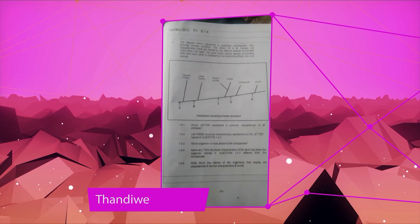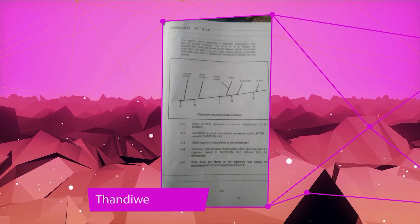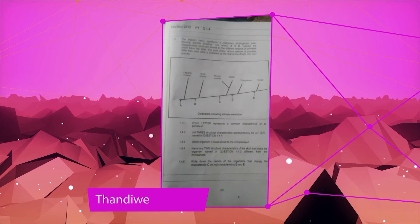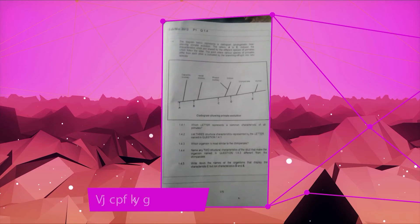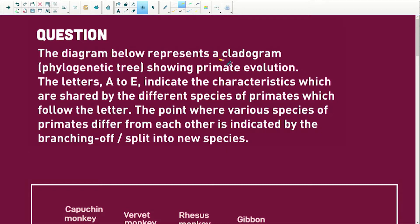Hi, my name is Kandiwe. May you help me with this life science question. There's a cladogram. A cladogram is just a fancy name for a phylogenetic tree. Phylo means phylum and the genes, so how they changed along the way, showing the primate evolution.